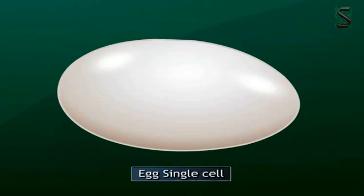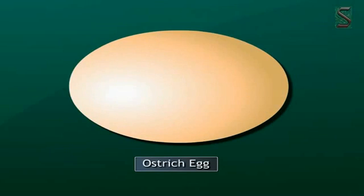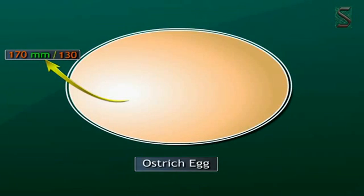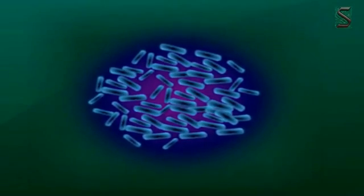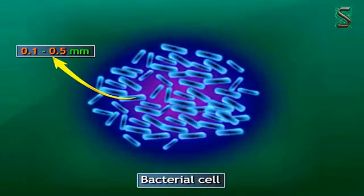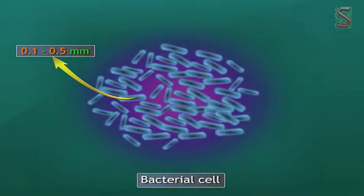Are there cells that can be seen with a naked eye? Yes. Well, one is a hen's egg. It is a single-cell. Oh! But, I never knew it was a single-cell. The largest cell is the egg of an ostrich, which measures 170 mm by 130 mm. At the other end of the range, the tiniest cell is the bacterial cell that measures 0.1 to 0.5 micrometers.